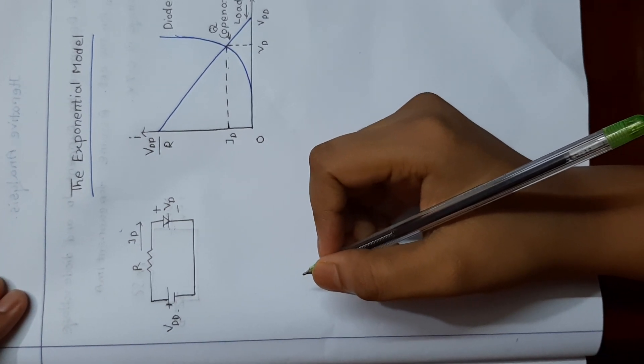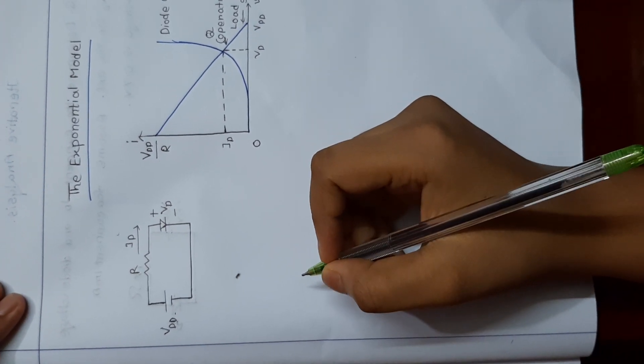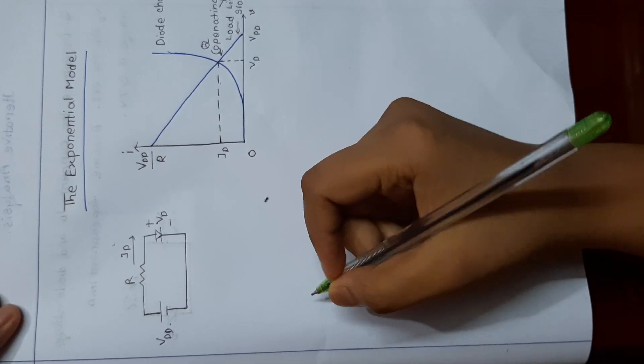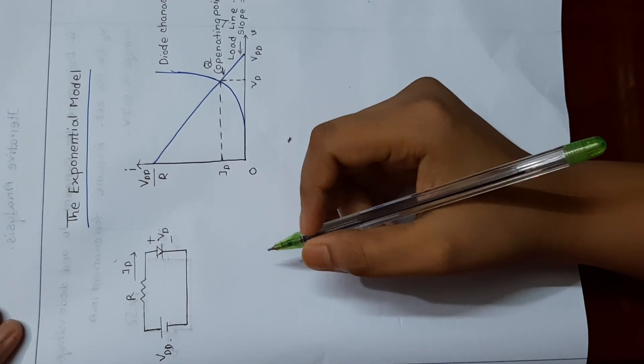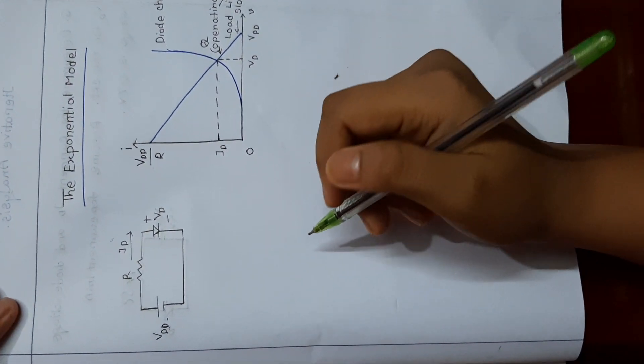In the previous video, I explained the IV characteristic of a diode. In this video, I am going to explain the exponential model of an ideal diode.